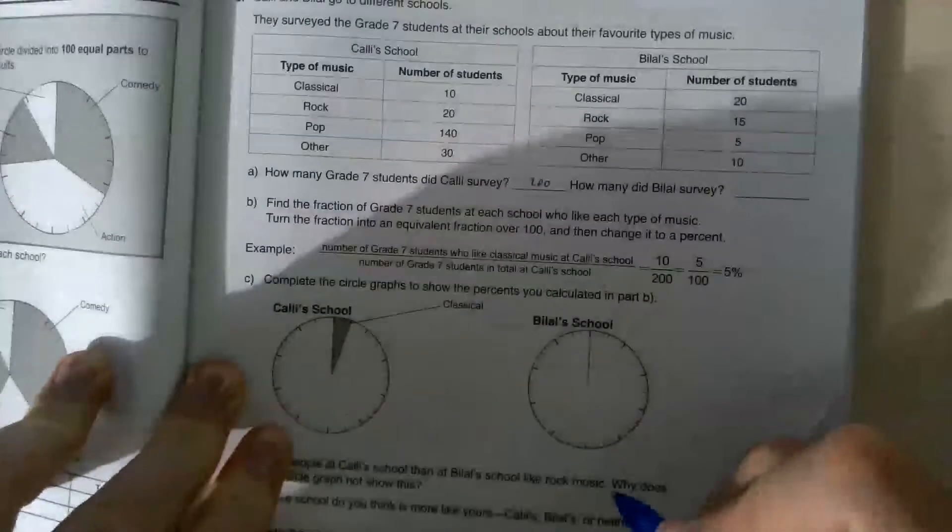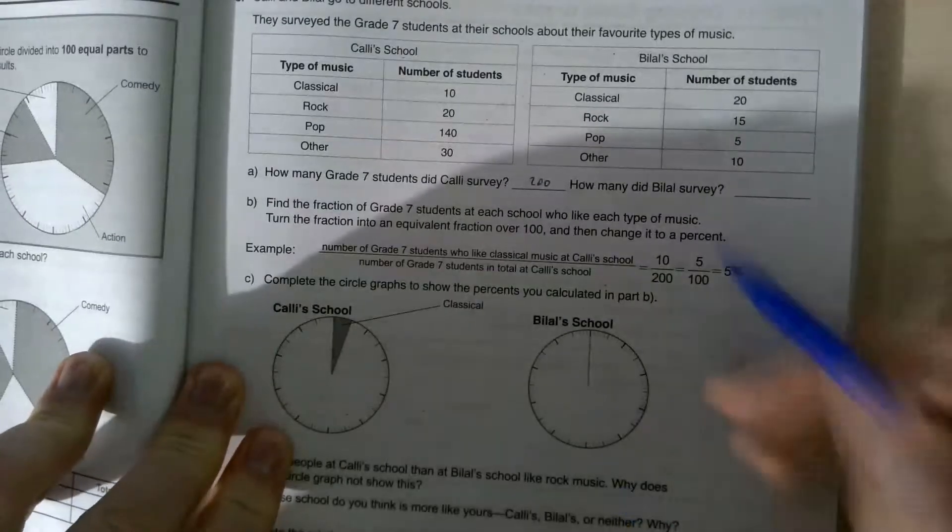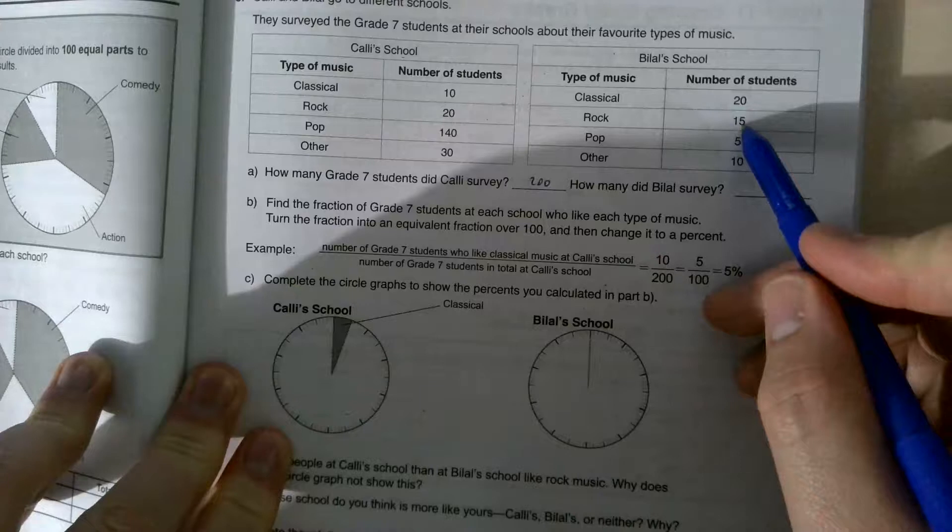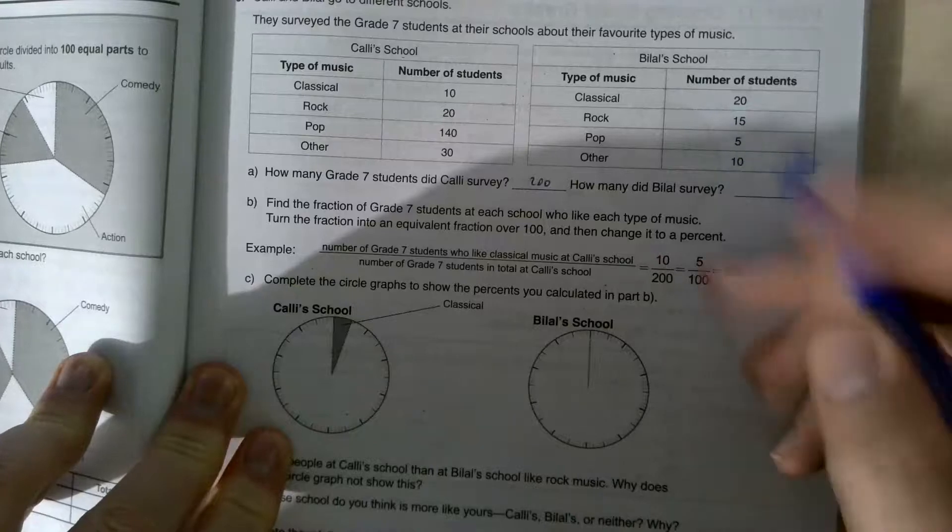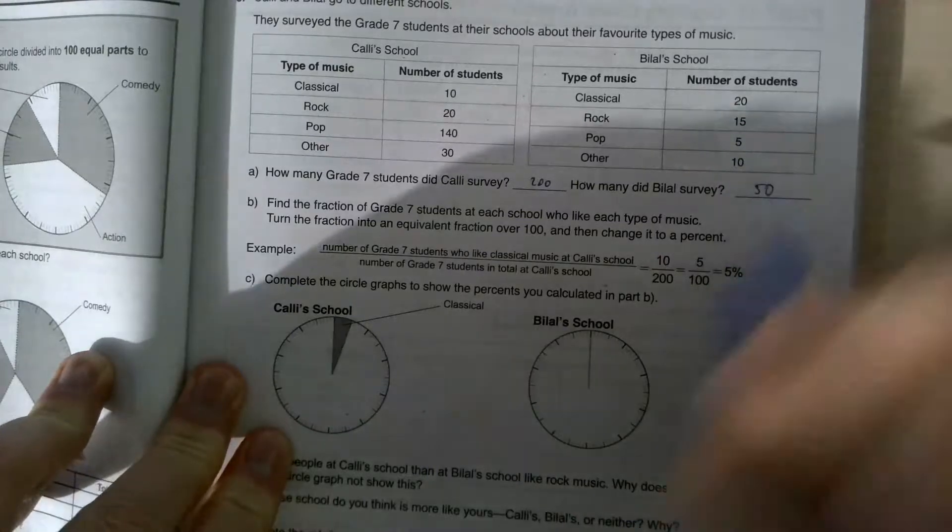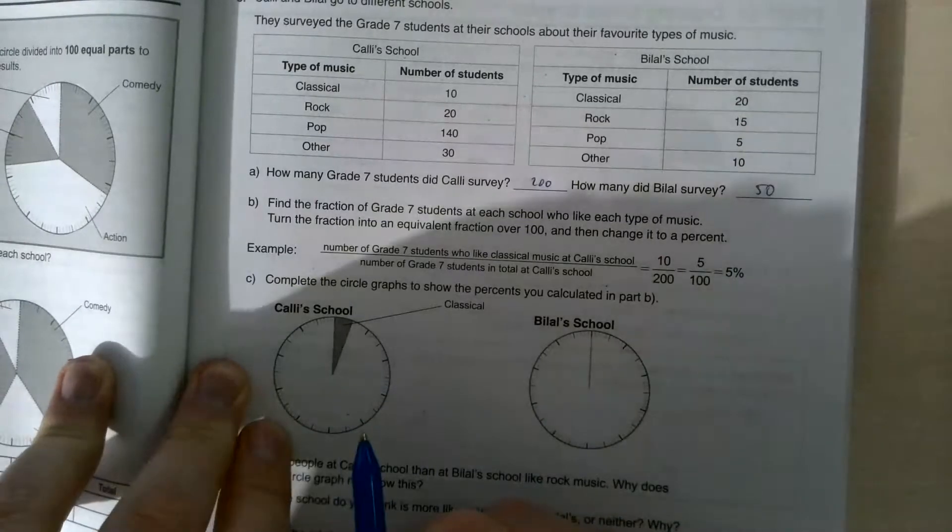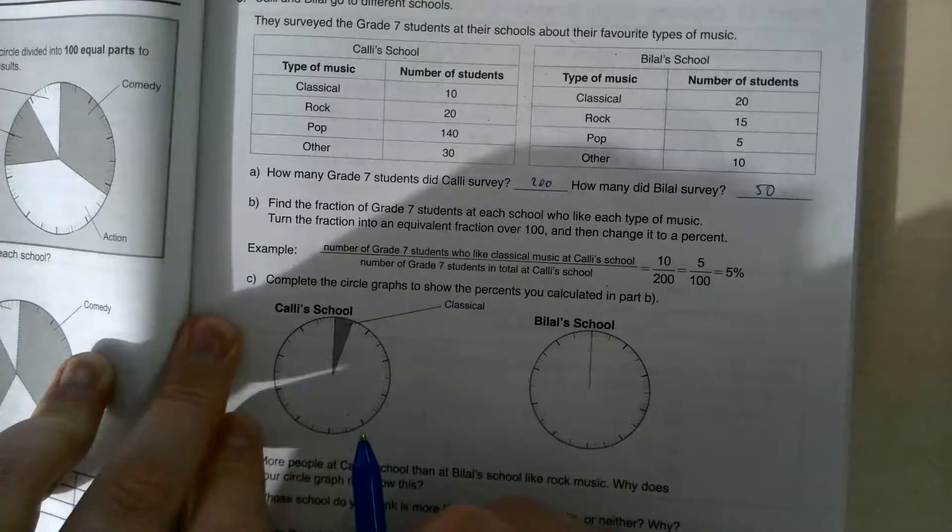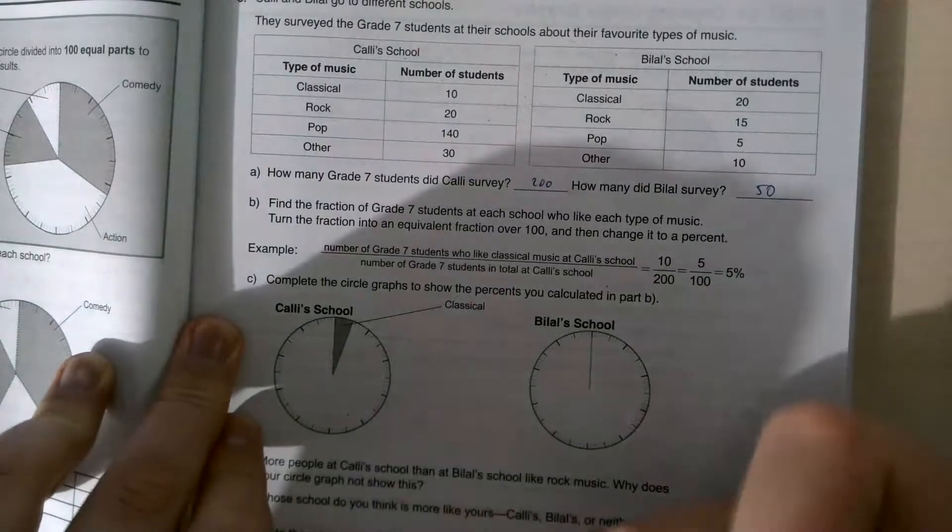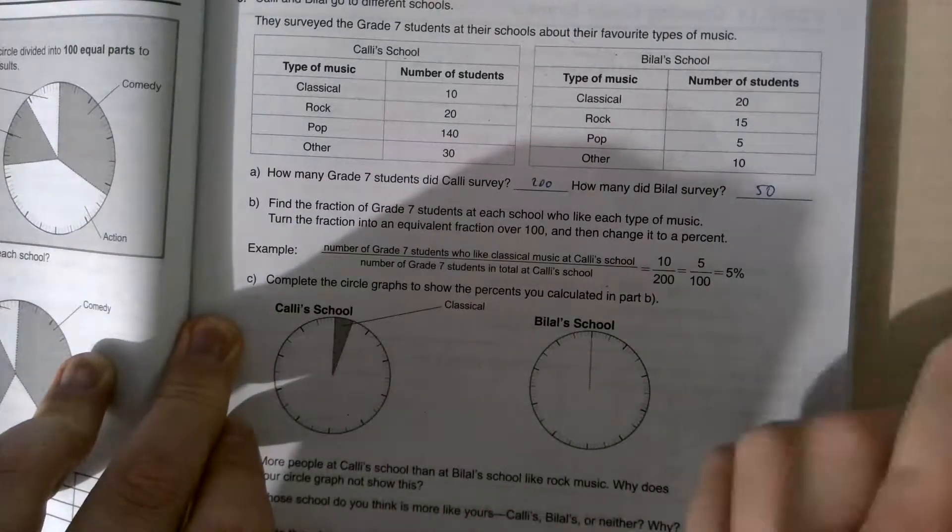How many did Bilal survey? We have 20 plus 15, so that's 35, 40, 50. So these are two very nice numbers, obviously. And what we can do from here now is we can start saying, let's actually figure out what the actual percentage is. So let's look at music.